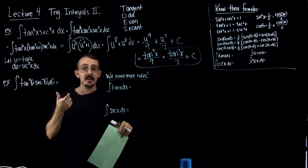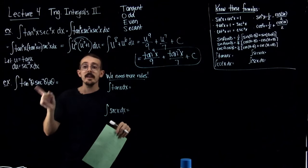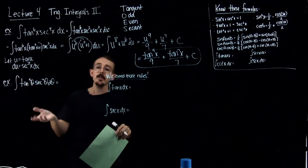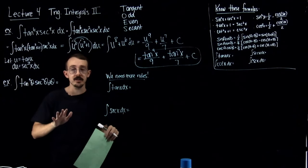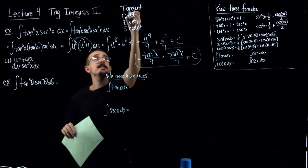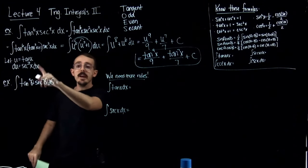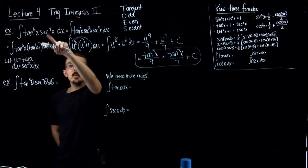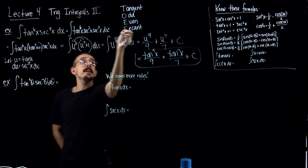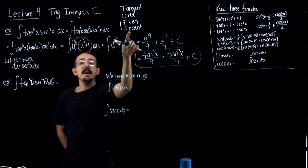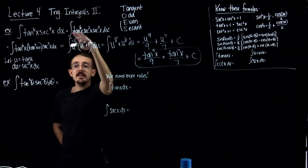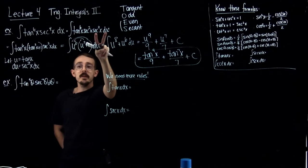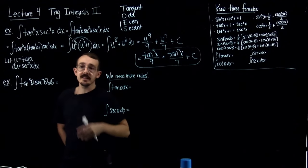With the sine and cosine integrals, I want at least one of them to be odd — that's the good case. If they're both even, I use the power reduction formula, which I'm not a fan of. In this example, I had secant even, not tangent odd, but that even secant case still works. You take one of the secant squareds, put it to the side, and turn the rest into tangents.